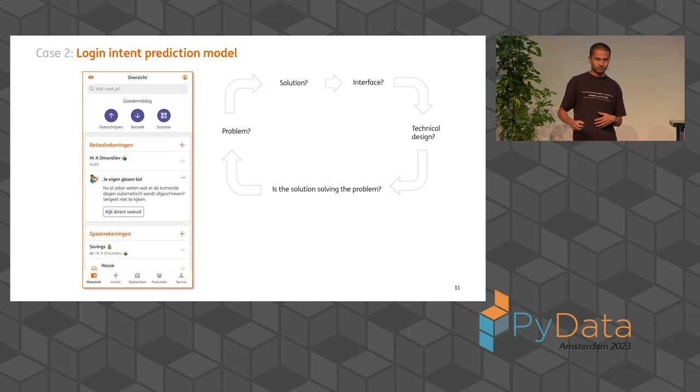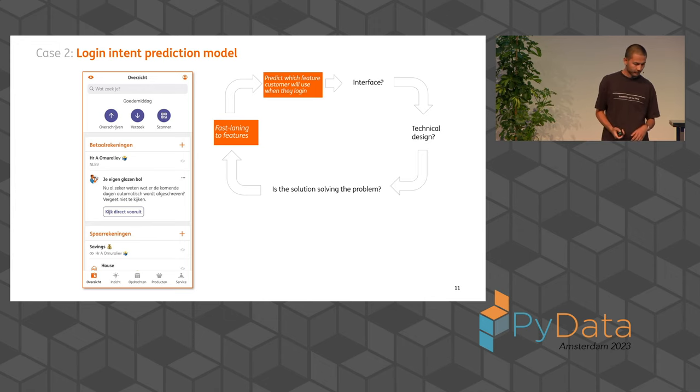The other case happened two years later. After I've worked on multiple projects, I started working on the login intent prediction model, and there I tried to extrapolate and bring with me some of the learnings from the previous project. The problem was that we have quite a few features in our app, and customers use a lot of them, but not all are available at a single click away. Some features, like predicting your future transactions, you need to click two or three times to get to that feature. So we thought that there's a customer problem of fast laning, right? Because some features are multiple clicks away, we thought that if we give them a shortcut, and they can get to what they want to do in just one click, that that's going to have a positive effect on the customer experience.